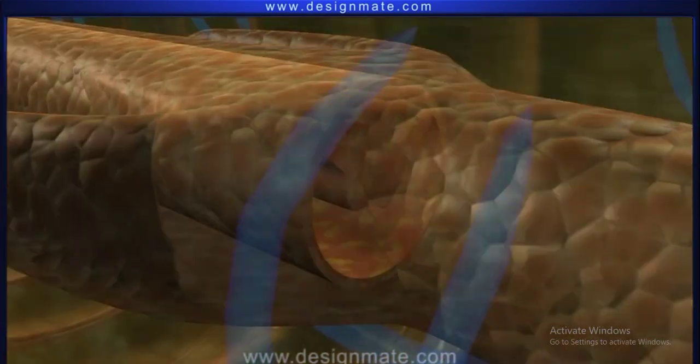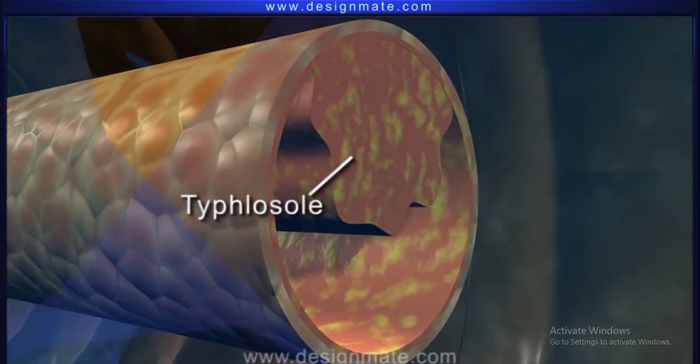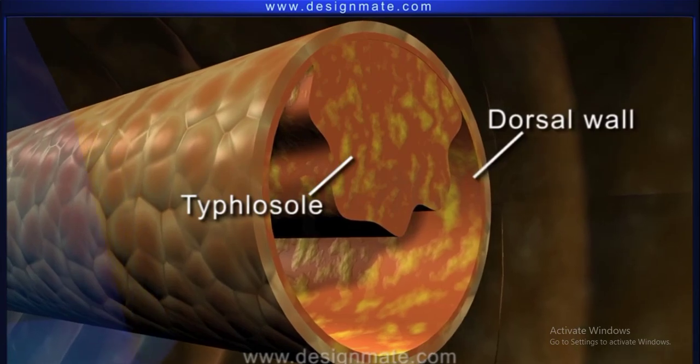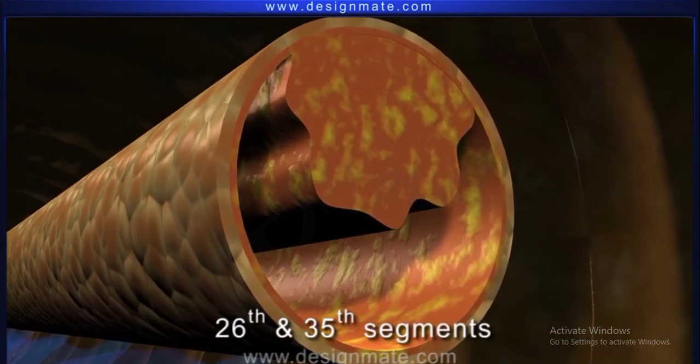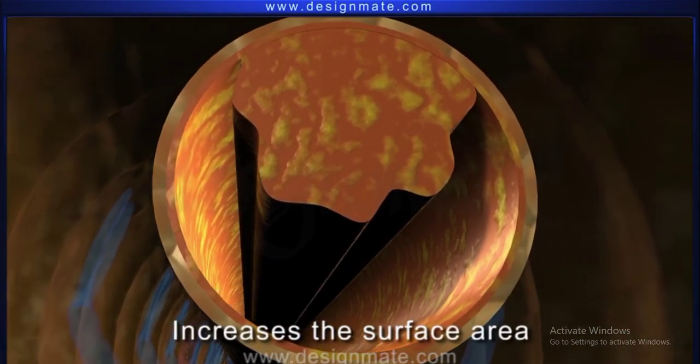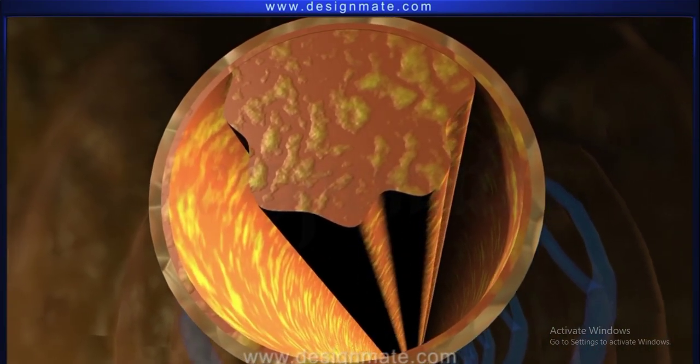Internal median folds called typhlosole present on the dorsal wall of the intestine between the 26th and 35th segments. It increases the surface area for absorption of digested food.